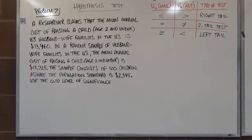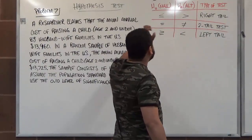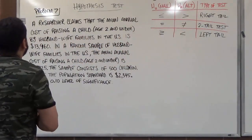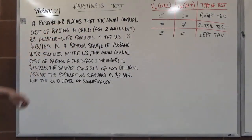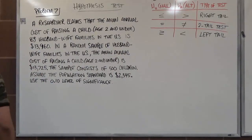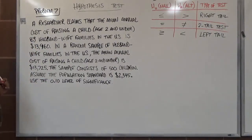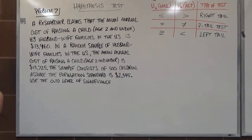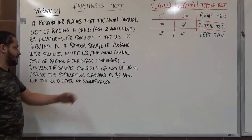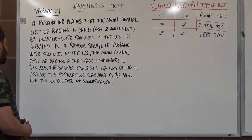Here we have problem seven, and on the right-hand side we have our table for how to indicate the type of null hypothesis and alternative hypothesis from a claim. A researcher claims that the mean annual cost of raising a child, age 2 and under, by husband and wife families in the U.S. is $13,960. In a random sample of husband and wife families in the U.S., the mean annual cost of raising a child, age 2 and under, is $13,725. The sample consists of 500 children. Assume the population standard deviation is $2,345, and use the 0.10 level of significance.